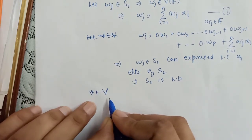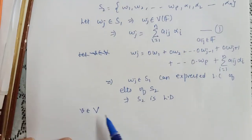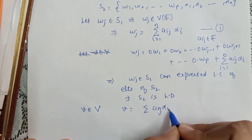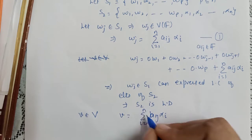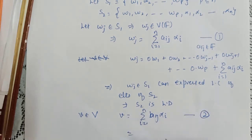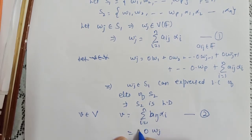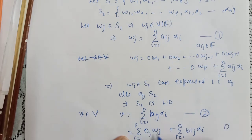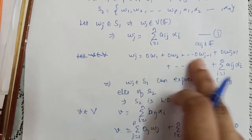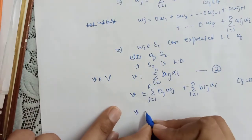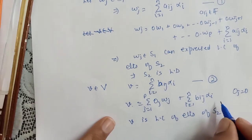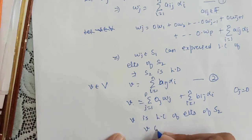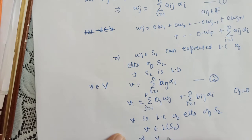Now take any arbitrary element v from vector space V. Since B is a basis, v can be written as a linear combination of the basis elements: v = Σ bᵢⱼ αᵢ, for i from 1 to n — call this Equation 2. We can rewrite this as: 0·wⱼ (for j from 1 to p) + Σ bᵢⱼ αᵢ, meaning v is a linear combination of elements of S₂.